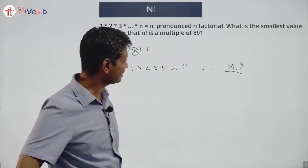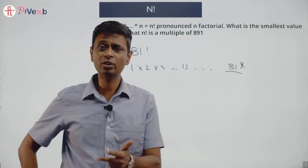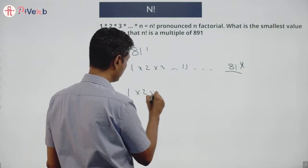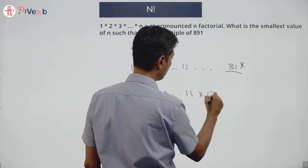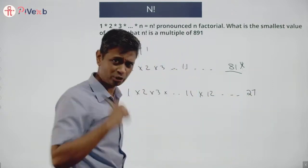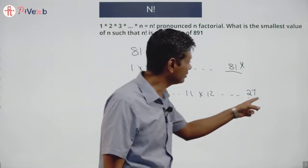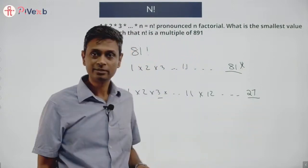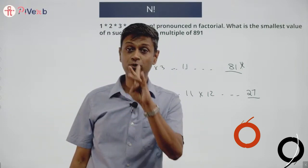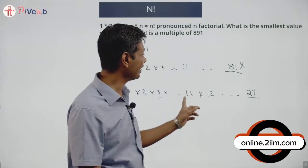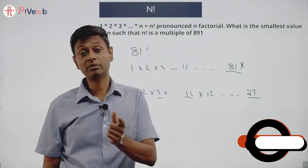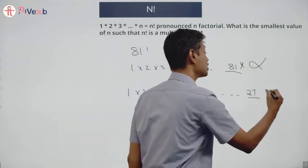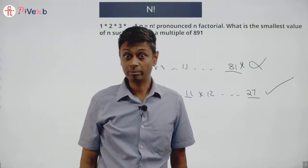Maybe I can accommodate it even smaller. 81 = 3⁴, so maybe I don't need to go all the way to 81. Suppose I write 1 into 2 into 3 all the way to 27 — hypothetically. 27 = 3³, and there is a 3 in the product, so this number will be a multiple of 3⁴. It definitely has 11 in it, so it's a multiple of 3⁴ × 11 = 891. I don't need to go to 81; I can achieve it with 27. Maybe I can do even better.